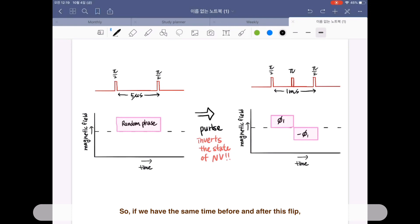So, if we have the same time before and after this flip, then the effect of the field exactly cancels and the quantum state is protected. This is called spin echo.